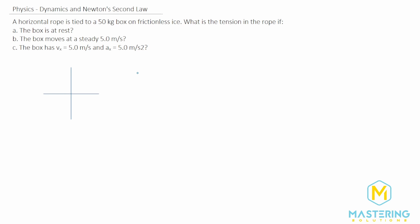Welcome to Mastering Solutions. In this problem, we have a horizontal rope tied to a 50-kilogram box on frictionless ice, and then we have these three situations.